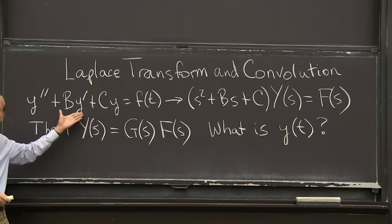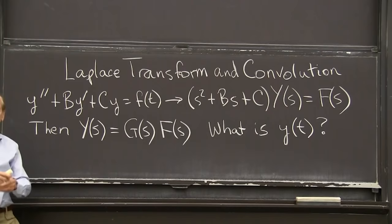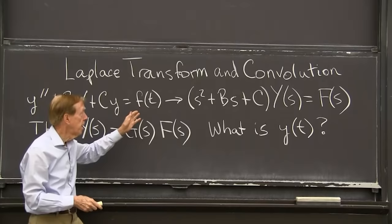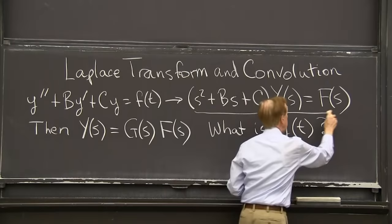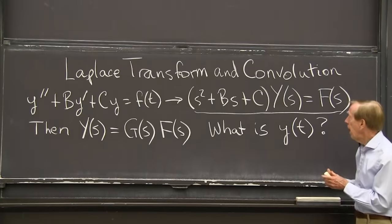And the problem is our basic problem, second order, linear, constant coefficient with a forcing term. And we know that the Laplace, and I'll take zero boundary conditions so that the Laplace transform is just s squared y plus Bs plus Cy equals f(s), and that's the transform of our equation.